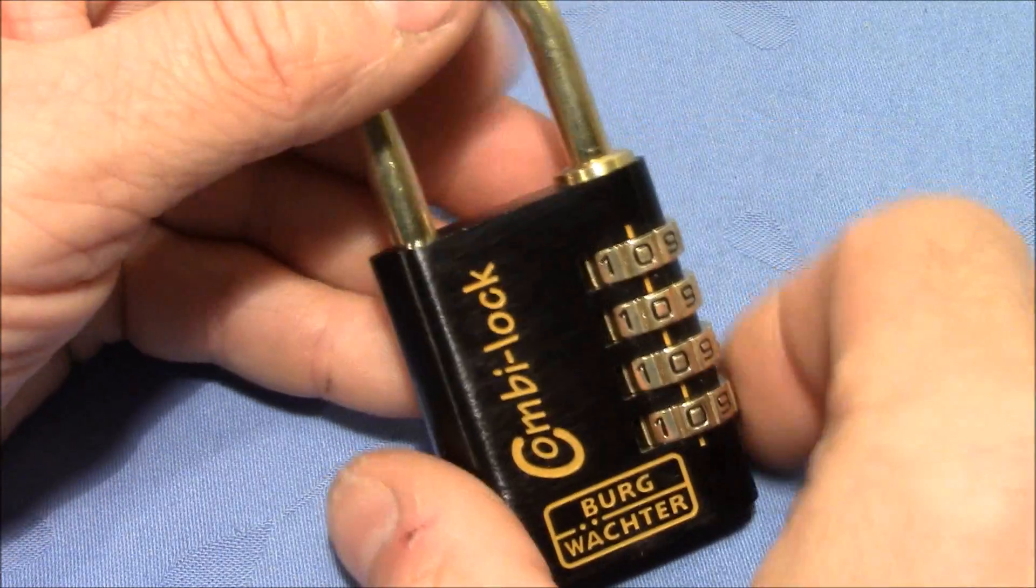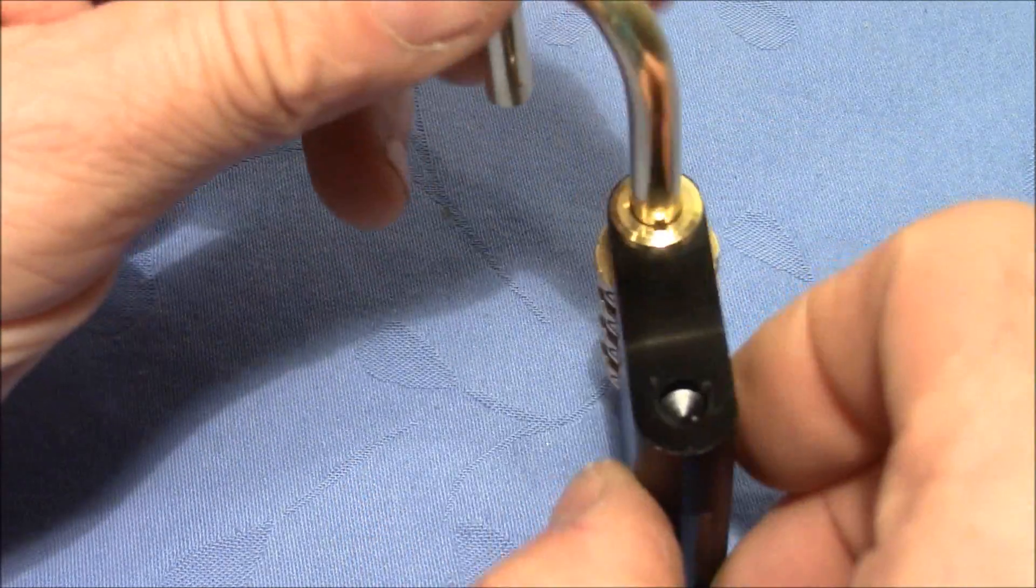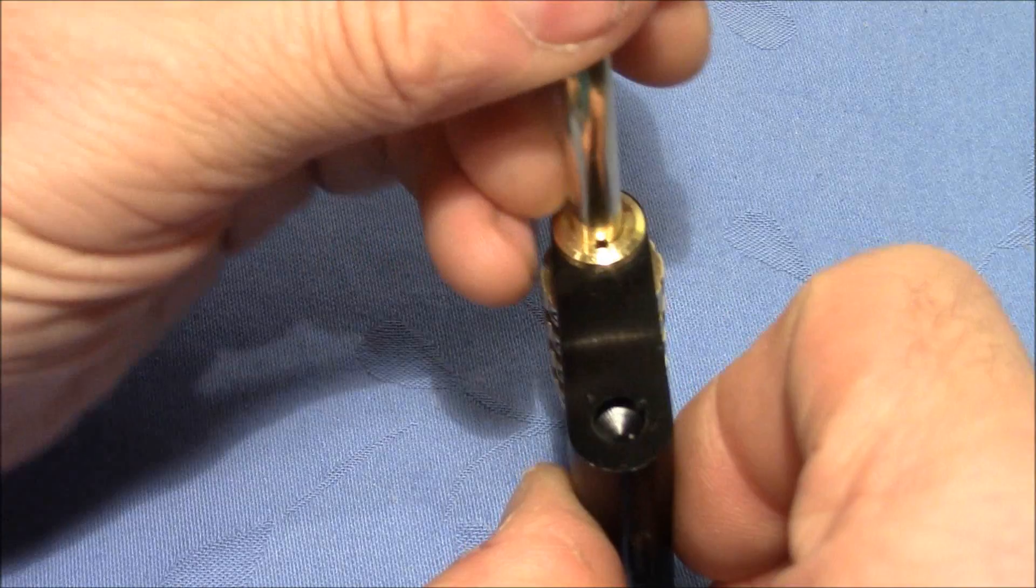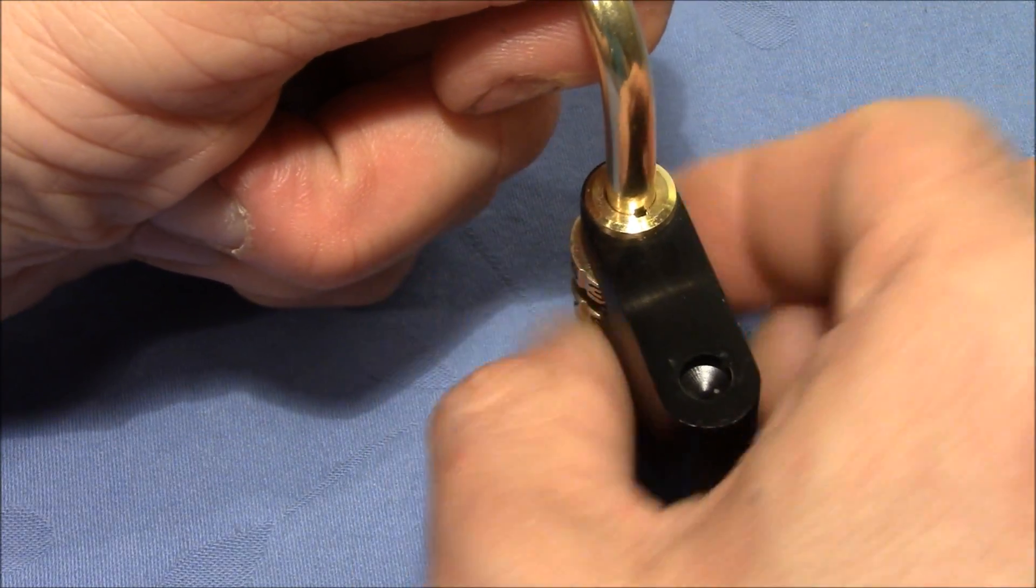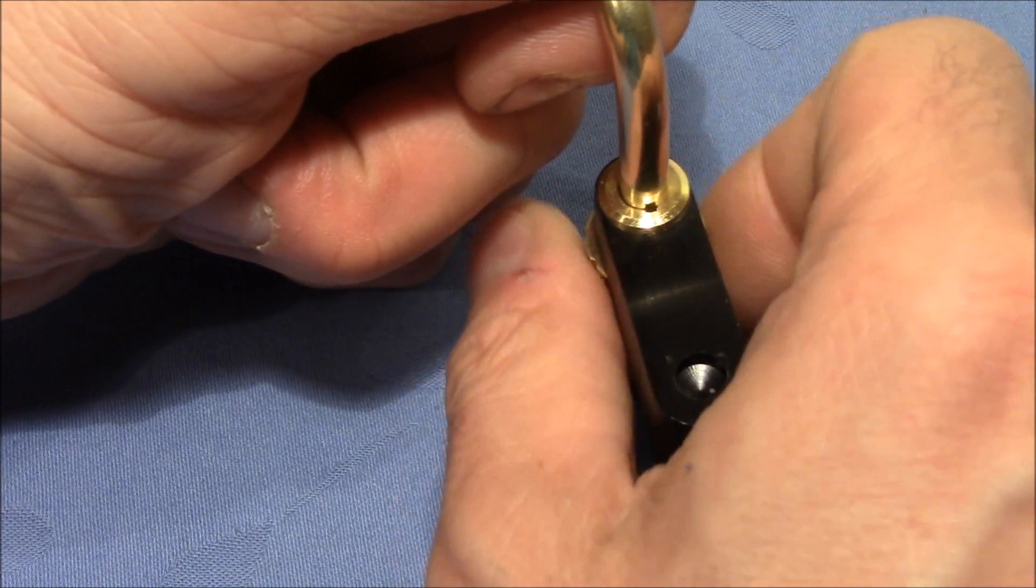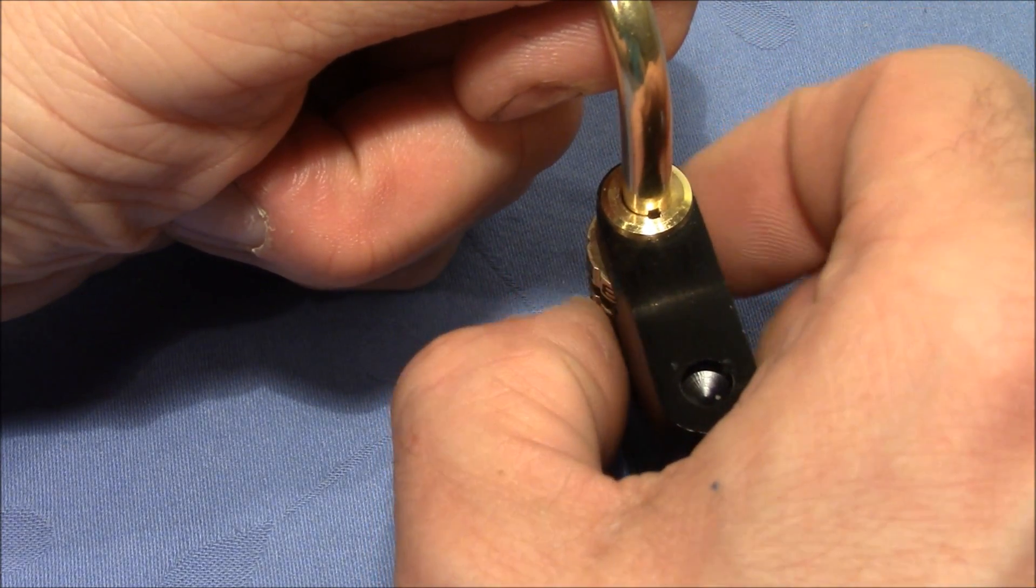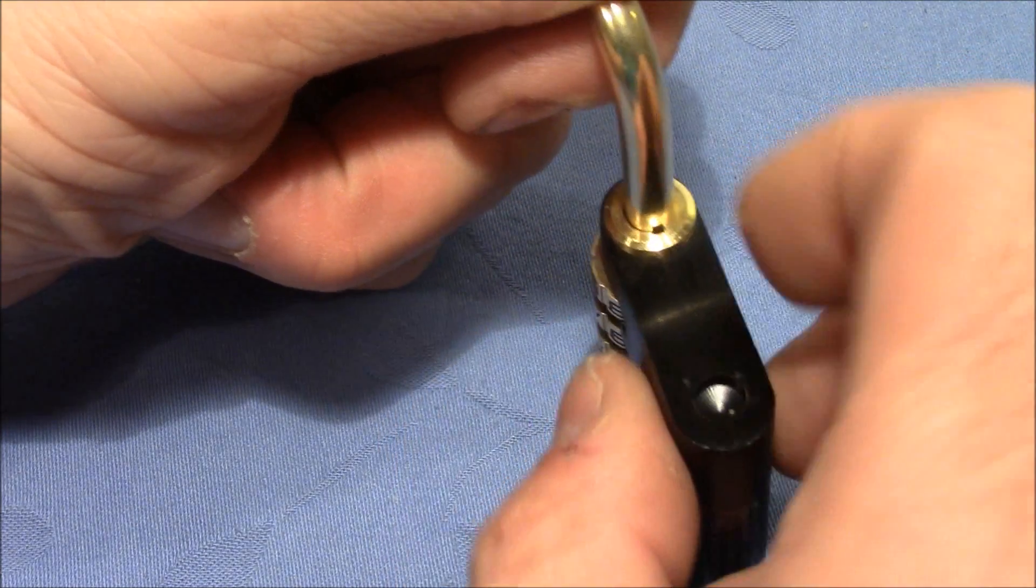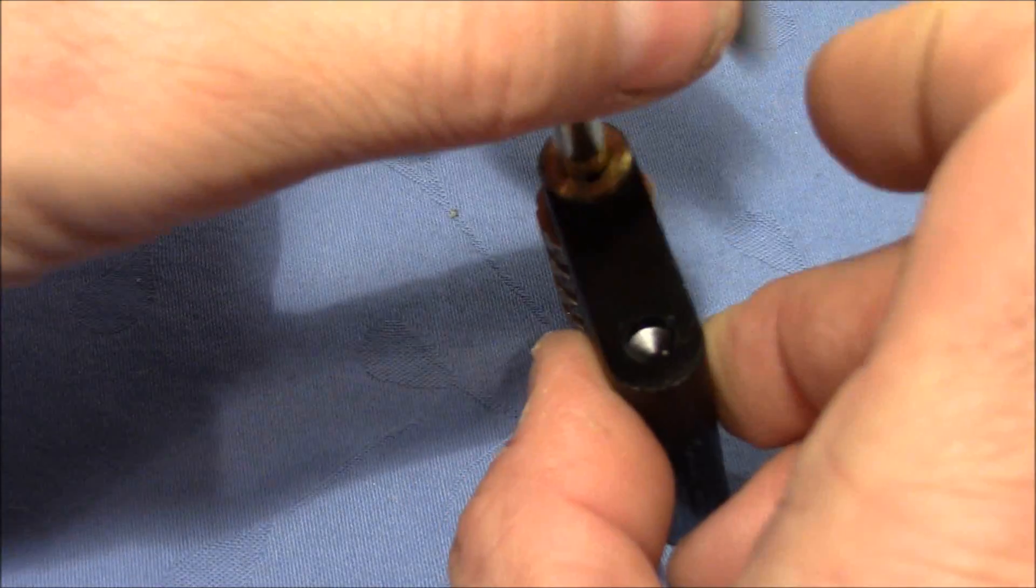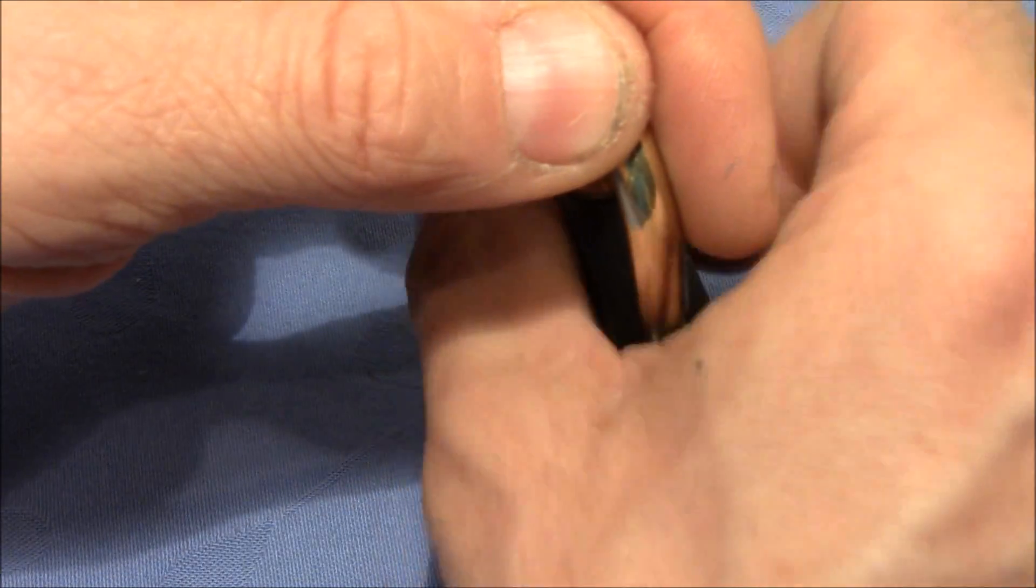So currently we have all zeros as combination. I turn around the shackle 180 degrees, push it down, and this allows me to change the combination. I change it to a new combination that I don't know. Just make sure that the wheels are at a number and not in between. I release the shackle, turn it around, close the lock and shuffle the wheels.